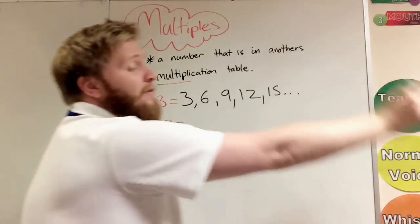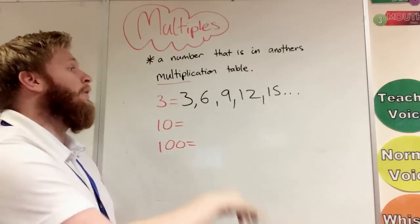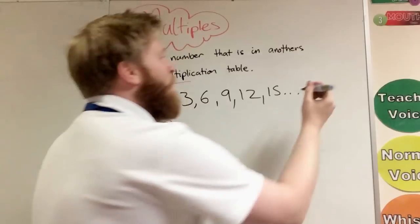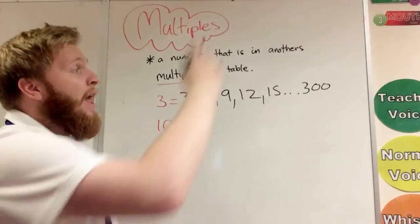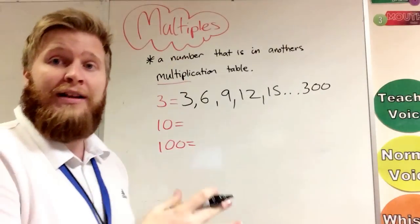All the way, a hundred times three would be three hundred, so three hundred is a multiple of three, and so on.